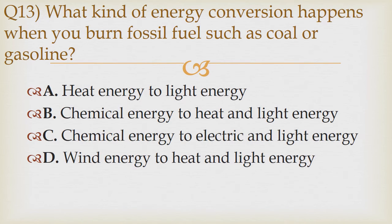Question number 13. What kind of energy conversion happens when you burn fossil fuels such as coal or gasoline? Option A: Heat energy to light energy. Option B: Chemical energy to heat and light energy. Option C: Chemical energy to electric and light energy. Option D: Wind energy to heat and light energy. The correct answer is Option B — chemical energy to heat and light energy.